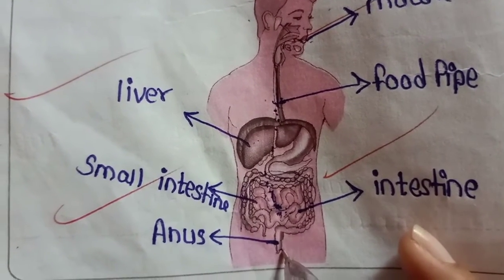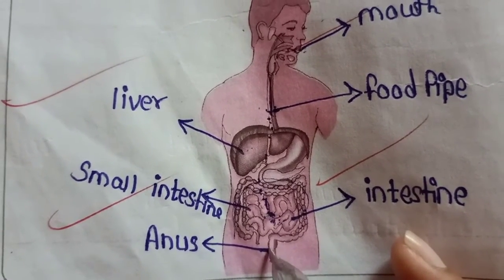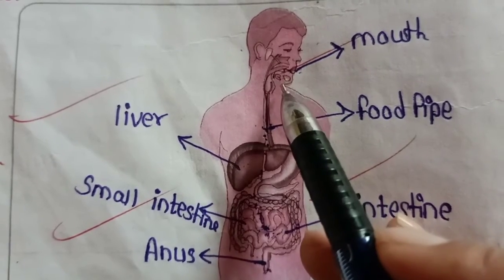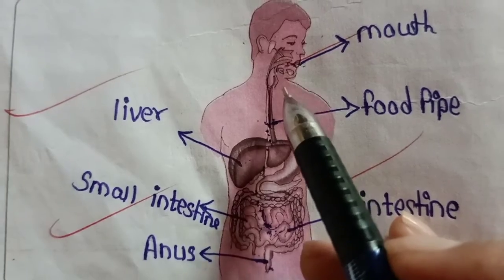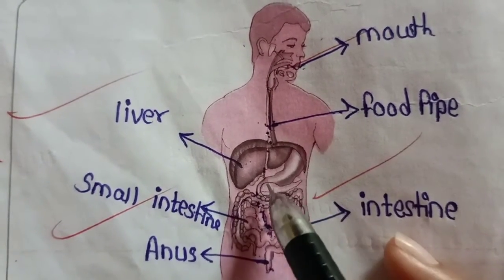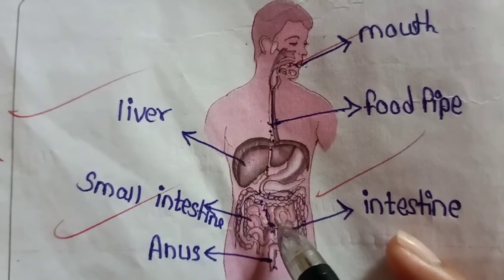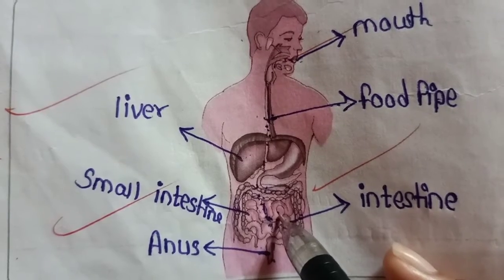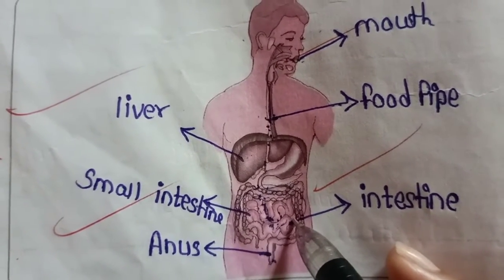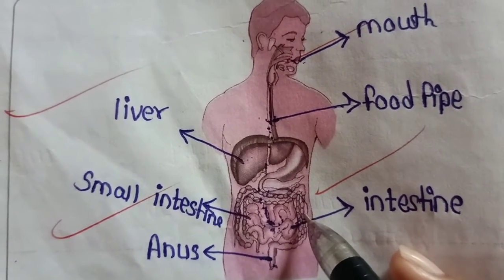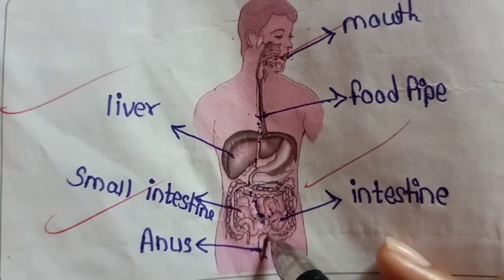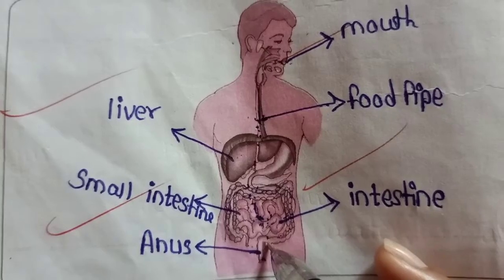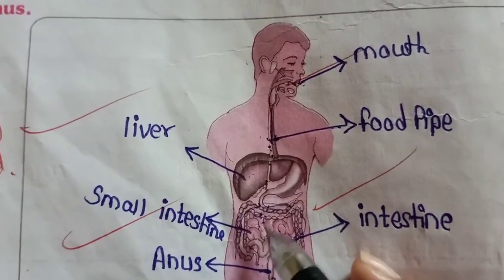The anus throws out all the body's waste material. So to recap: first we chew our food in the mouth, then food enters the stomach through the food pipe, where it gets digested. After that, undigested food is stored in the small intestine, which then passes it to the large intestine. Whatever waste remains gets out through the anus. The large intestine passes the undigested food to the anus, which removes all the body's waste.